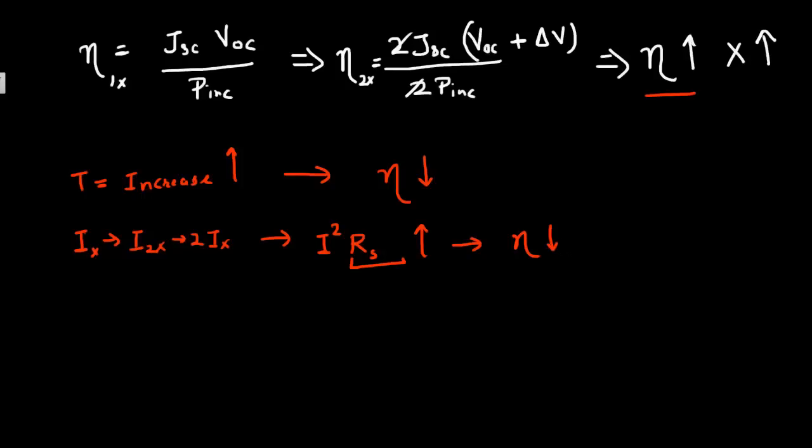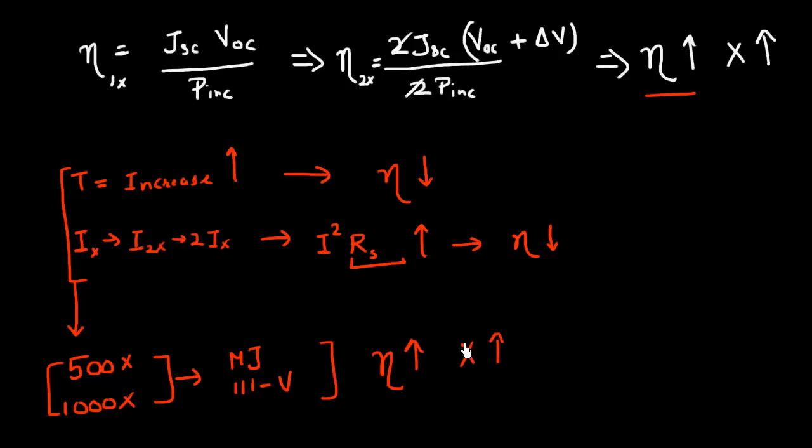So typically due to these considerations, the concentration of light, the maximum concentration of light that is used is limited to around 500x, or at maximum around 1000x. And the highest efficiency multi-junction or 3-5 based solar cells, they make use of this fact that your efficiency increases as you increase your concentration, and they use these very high concentrations to boost up the efficiencies in these solar cells.